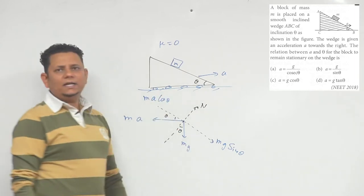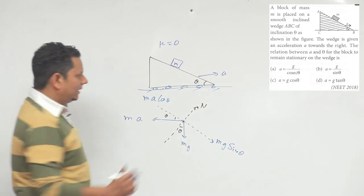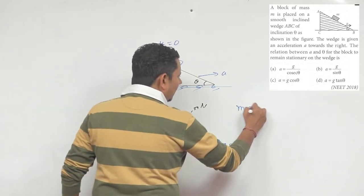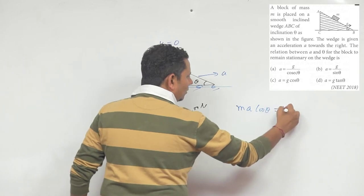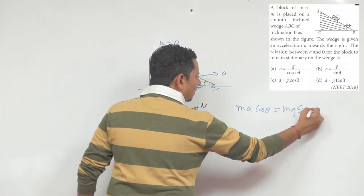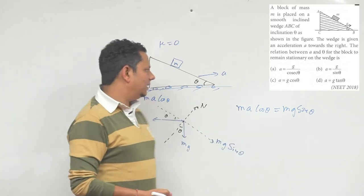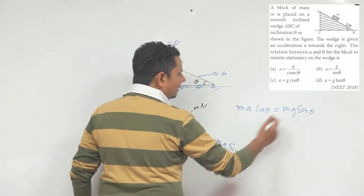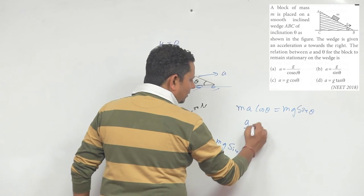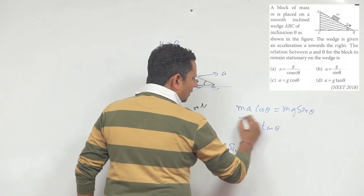We can say that ma cos theta will be equal to mg sin theta. M will get cancelled, and if we divide cos theta and sin theta, then this will give us a/g equals tan theta.